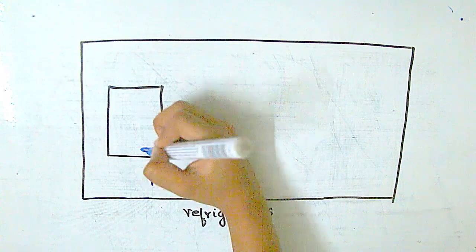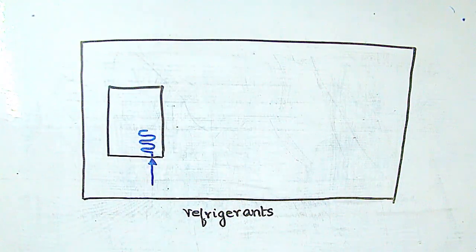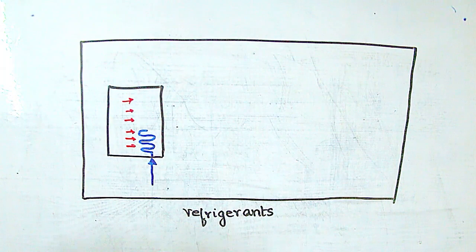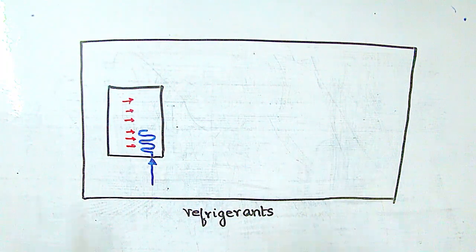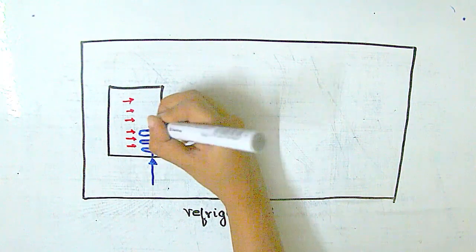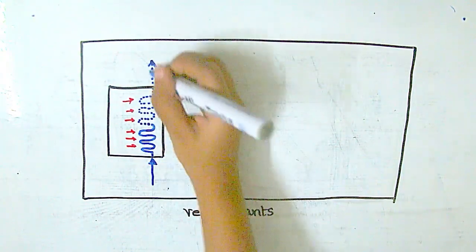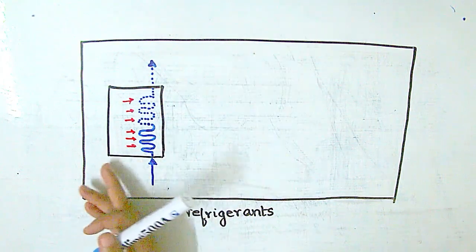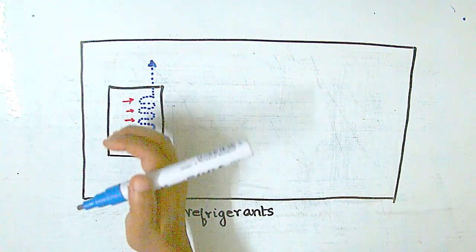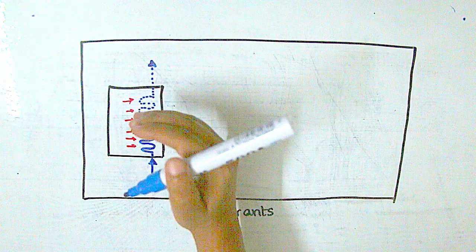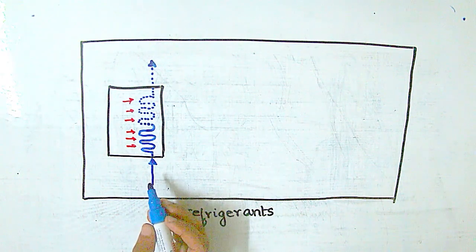We take a box, add cold liquid refrigerant, and the heat from the box transfers to the refrigerant. When we heat a liquid, it evaporates. So the liquid refrigerant inside the box absorbs heat energy and turns into vapor. Heat energy is added to the liquid, so the box becomes colder — the heat energy inside the box is lower. This solves the ice cube problem.